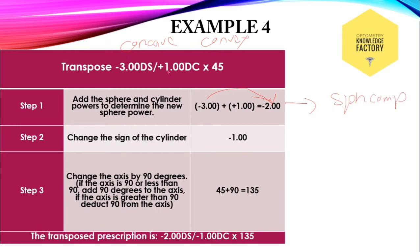Then change the sign of the cylinder. Here the cylinder is convex. Change it into concave by adding a minus sign. Then change the axis by 90 degrees. Here the axis is 45, which is lesser than 90. So add 90 degrees to find out the axis of the transposed form: 45 plus 90 is 135. This is the axis of the transposed form. The transposed form of minus 3 diopter sphere with plus 1 diopter cylinder at 45 is minus 2 diopter sphere with minus 1 diopter cylinder at 135.